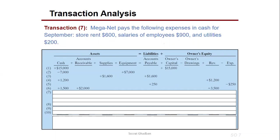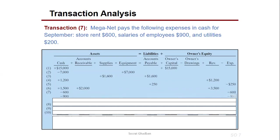Transaction 7: MEGANET pays the following expenses in cash for September. Cash decreased to cover rent of $600, salaries of $900, and utilities of $200. As you can see, minus $600, minus $900, and minus $200 in cash are recorded on one side, with the corresponding expenses on the other side of the equation.